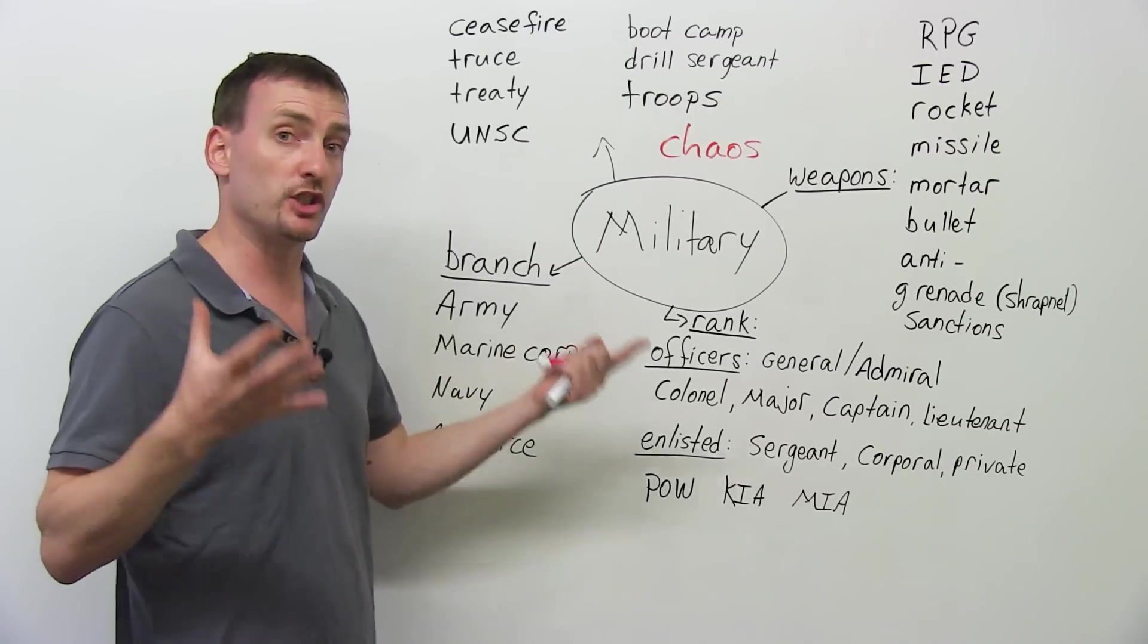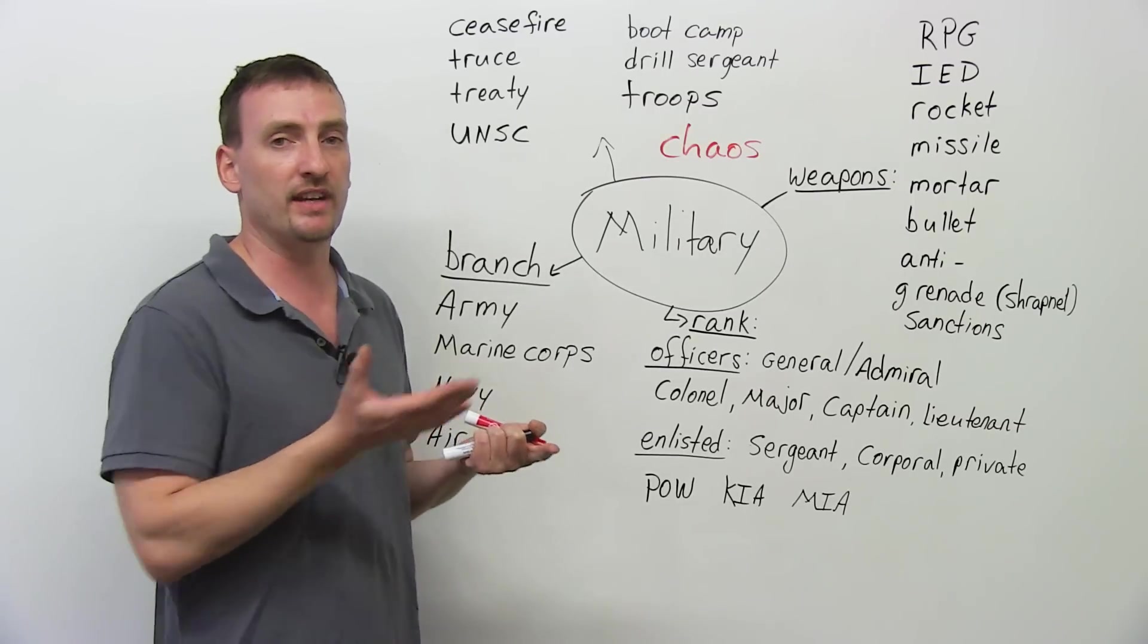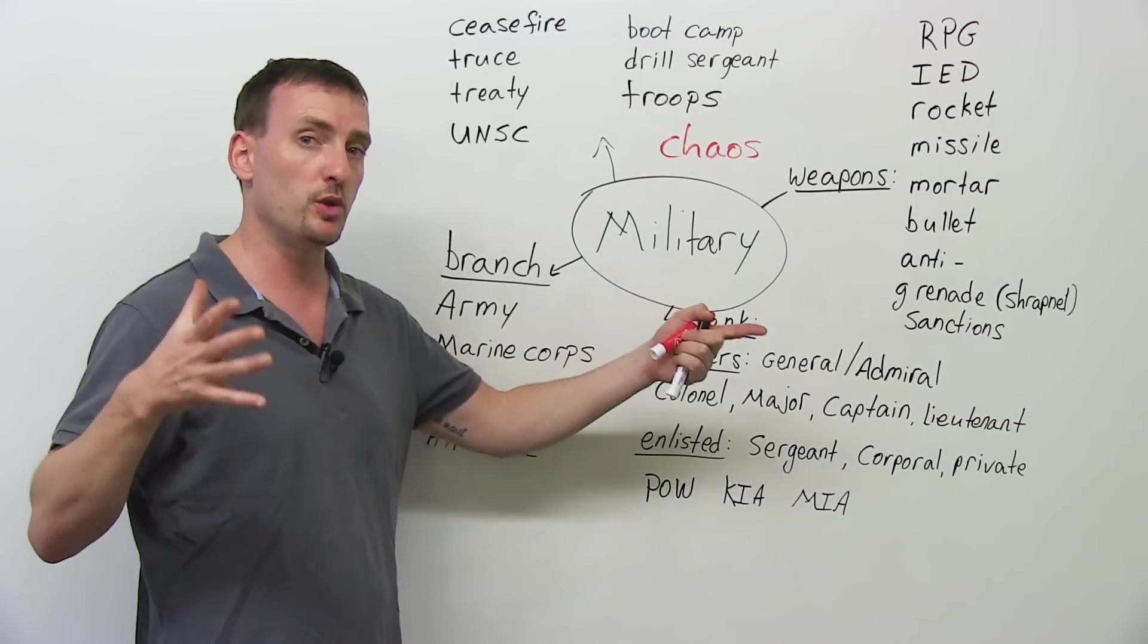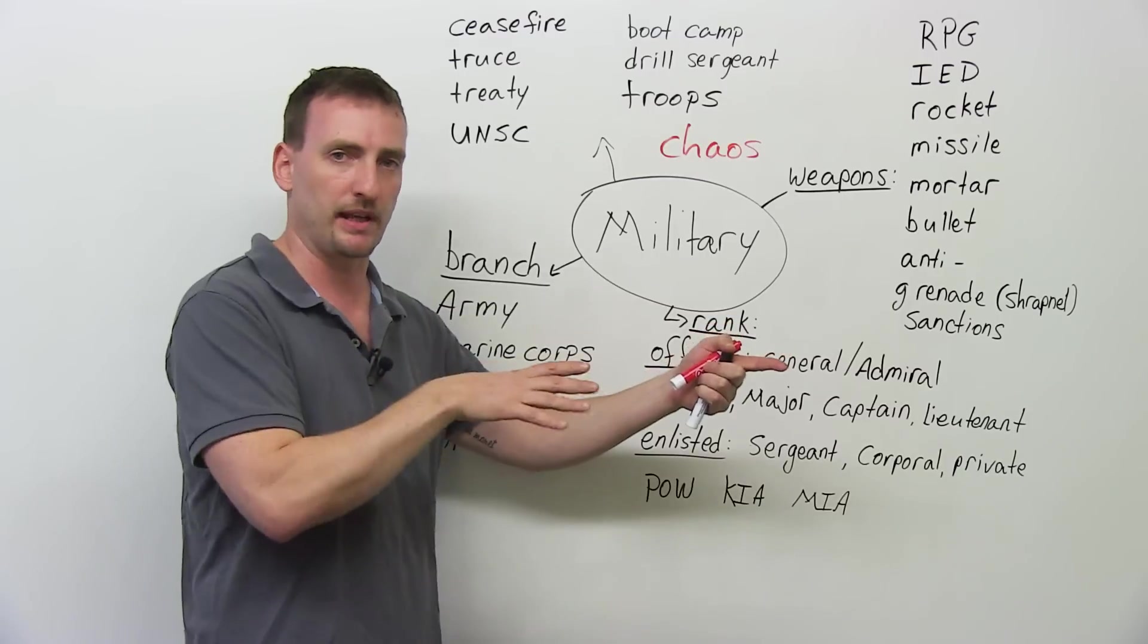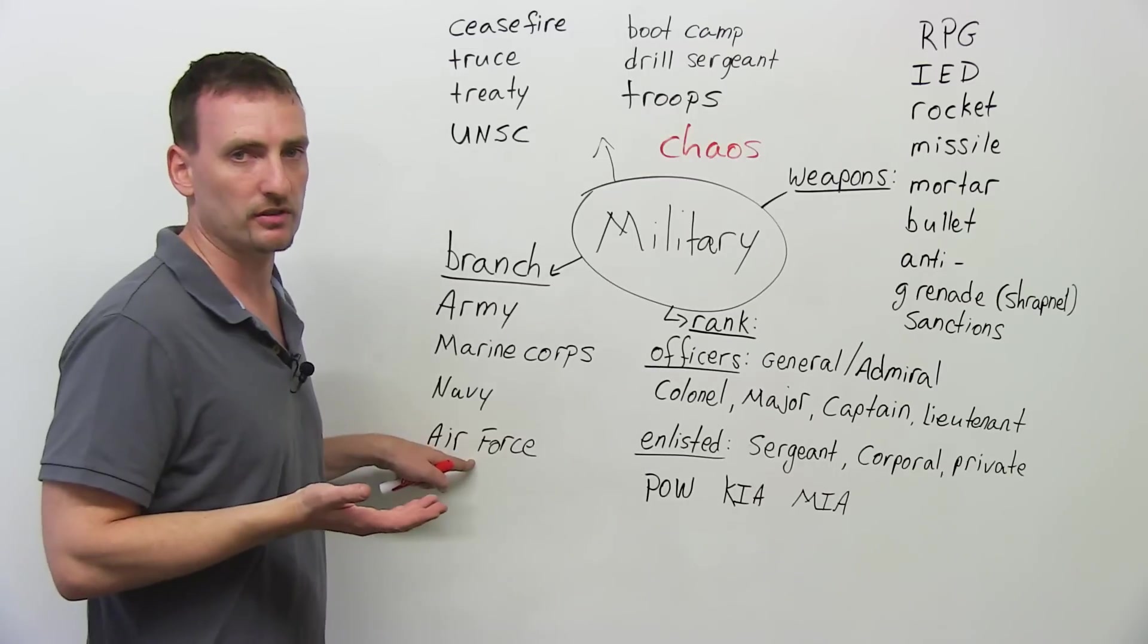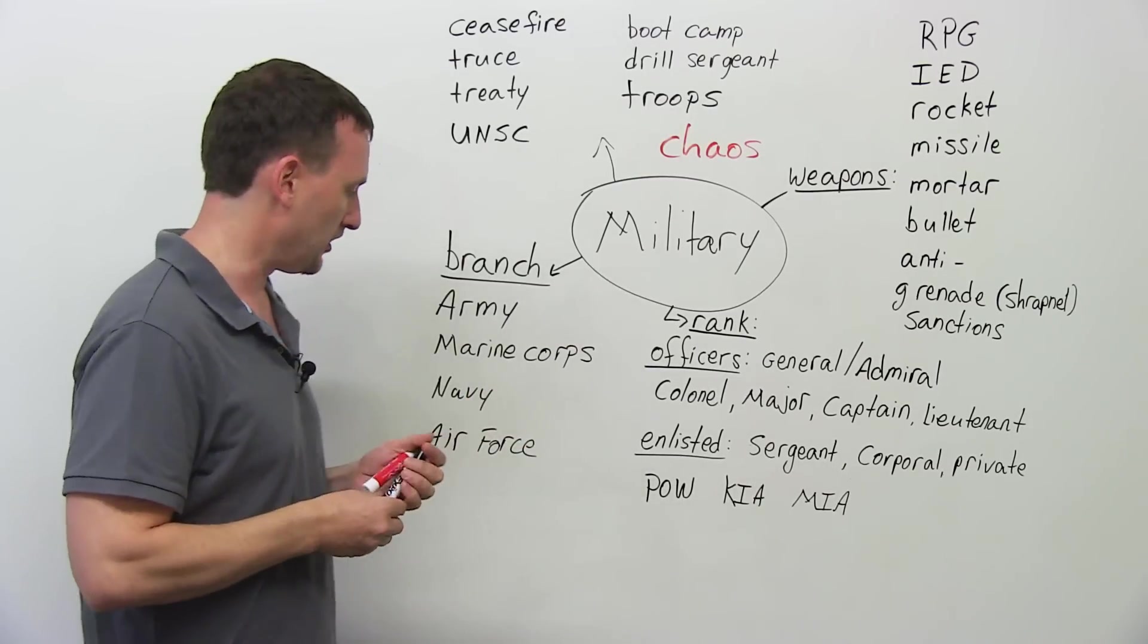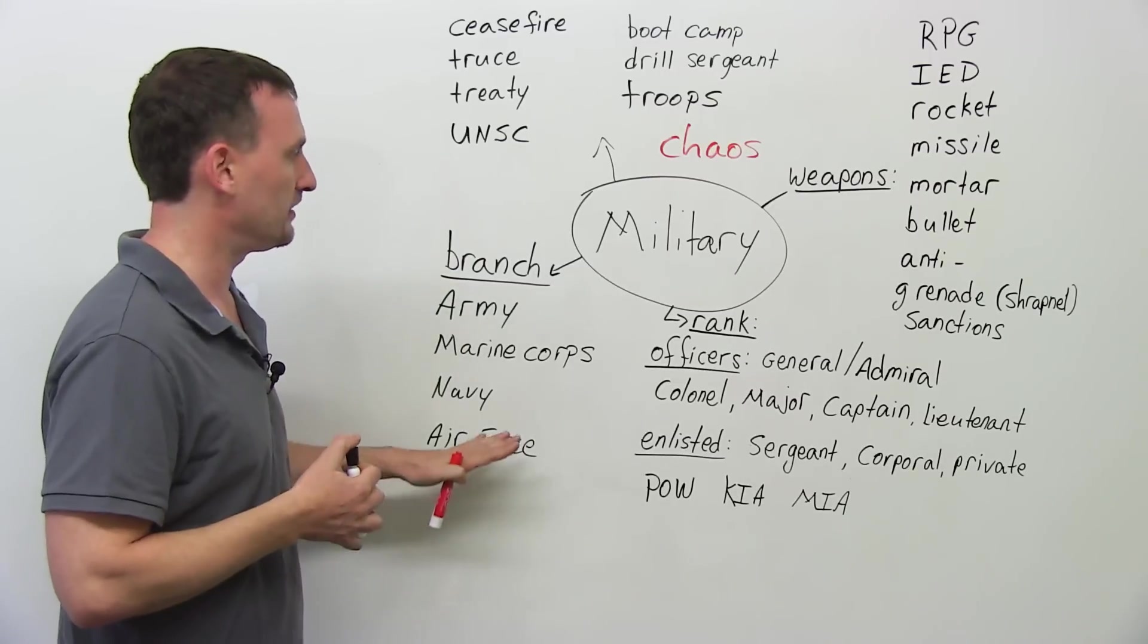The Navy. Navy has the ships, the submarines. They also have jets. They have Navy pilots, because they have those huge aircraft carriers that carry the planes. The plane can take off in the middle of the sea. And, of course, the Air Force. The Air Force has the jets, the pilots, and all that stuff. So this is the branches.